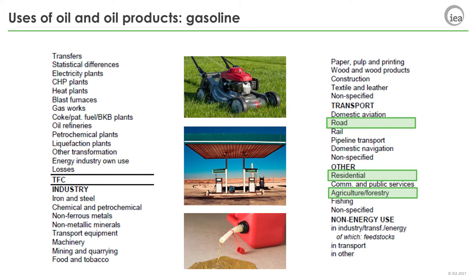Gasoline is most commonly thought of as a transportation fuel as it is used in cars, motorbikes, trucks, boats, and other transport vehicles. It is important to note that personal cars are categorized under road transport. All uses of gasoline in a vehicle are transport use. However, a household machine such as a lawn mower that takes gasoline is residential use. Similarly, farm equipment which runs on gasoline is agricultural use.